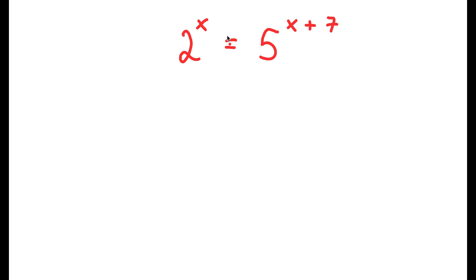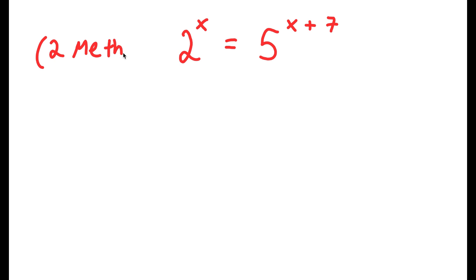All right, so in this problem I have 2 to the power of x is equal to 5 to the power of x plus 7. I actually have two methods to solve this problem, so make sure to stick around for the video to see me solve both methods.